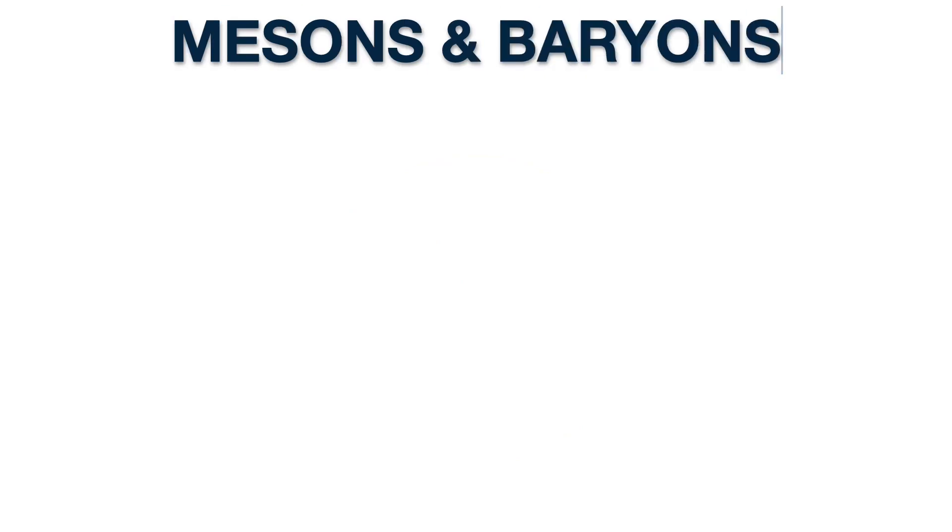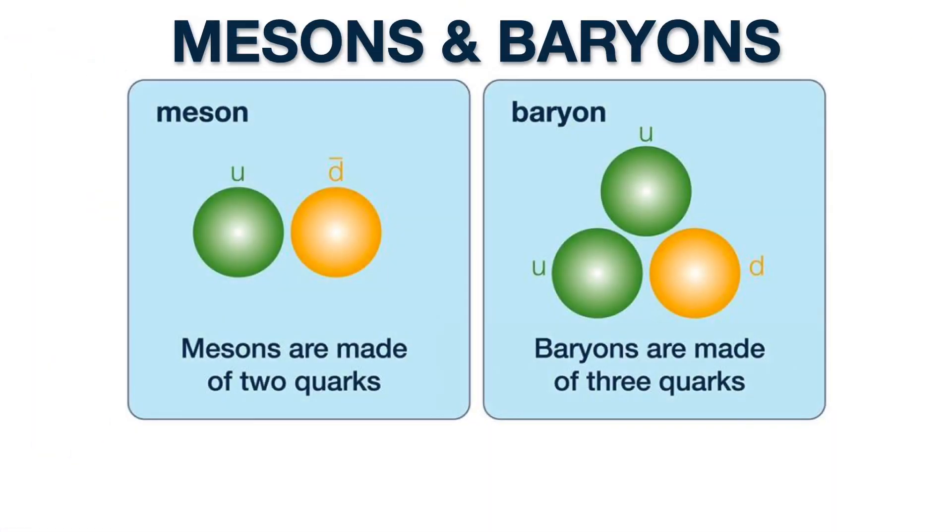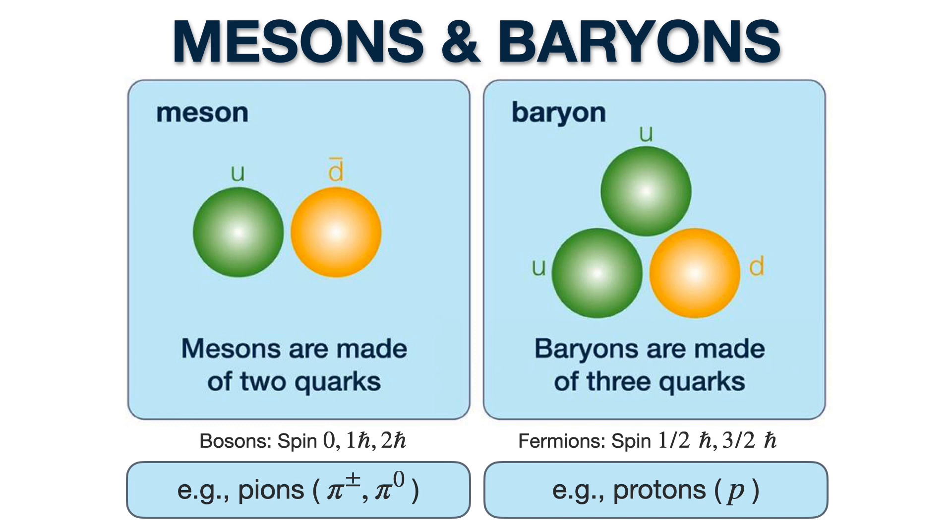So, let me introduce you to the two types of hadrons, mesons and baryons. There's also anti-baryons. The charge of a hadron is always an integer multiple of the electric charge E. The color charge of hadrons is always neutral.